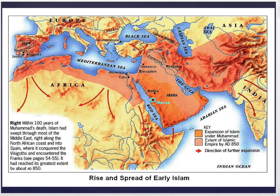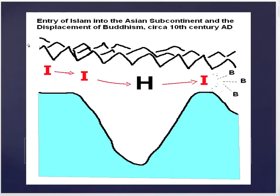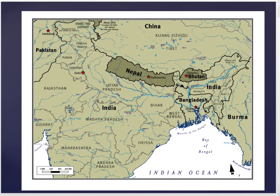The key observation is that Islam spreads and enters into the subcontinent. Islam comes into the subcontinent in the 10th century AD, impacts that massive Hindu population core, and had very little success converting it. Islam comes out the other end and displaced Buddhism from its core zone. The observation to note is that Buddhism has been displaced from its core zone by the entry of Islam in the 10th century AD — a thousand years ago.